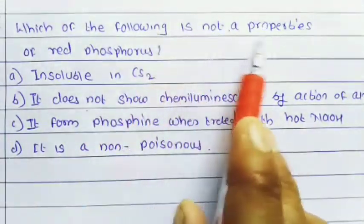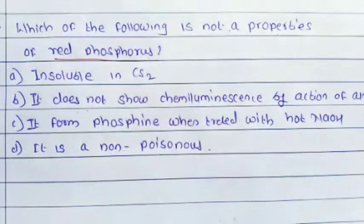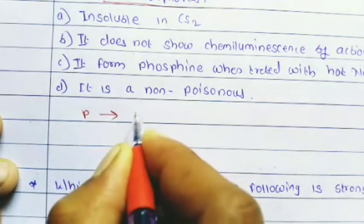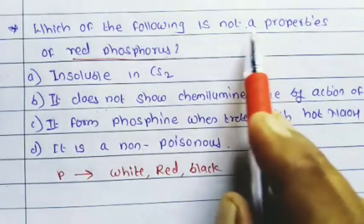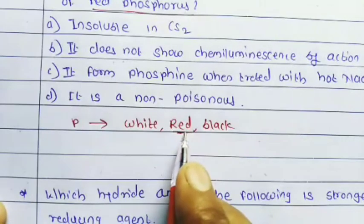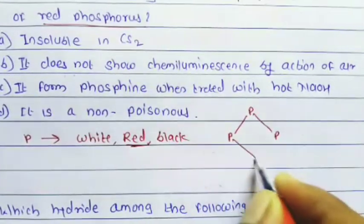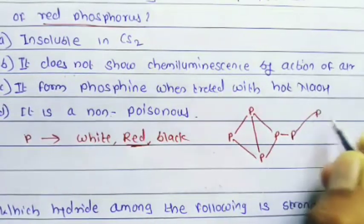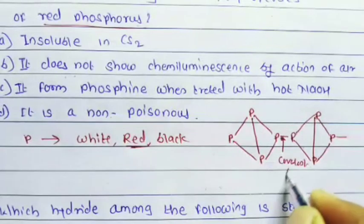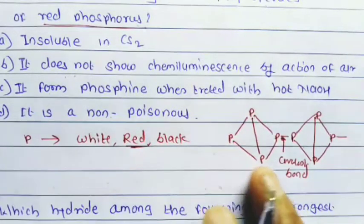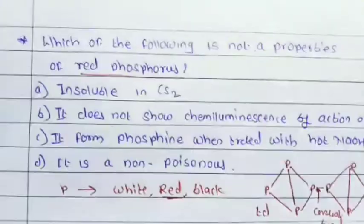Next question: which of the following is not a property of red phosphorus? Phosphorus gives three allotropes: white phosphorus, red phosphorus, and black phosphorus. Red phosphorus has a polymeric nature with tetrahedral units where phosphorus atoms are connected by covalent bonds.